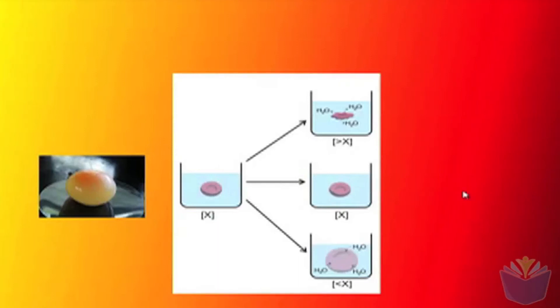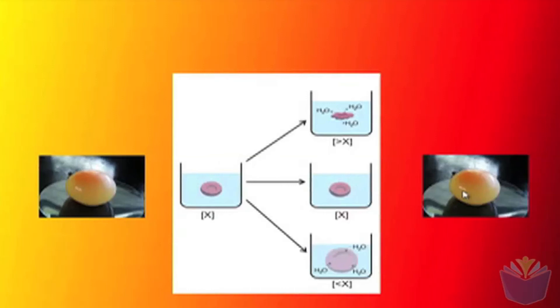Once it's reached equilibrium then we say that it's reached an isotonic state. That's basically where the net flow of water is equal in both directions. If we were to place this egg cell into, for example, a pure water solution, something like distilled water, then we'd see a net flow of water going into the cell. Therefore the egg would gain in weight and size.